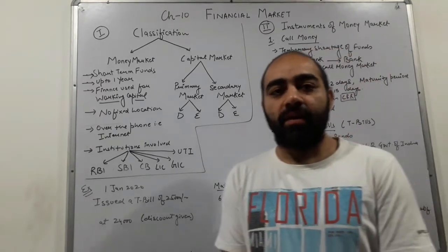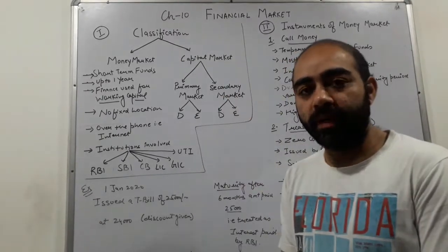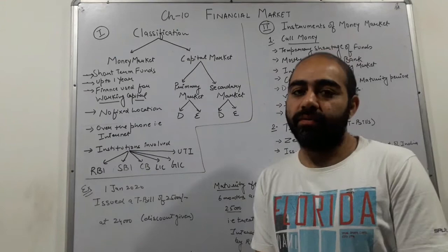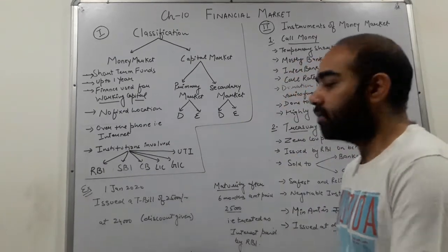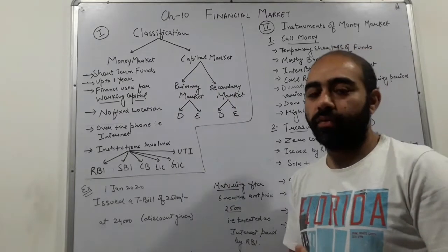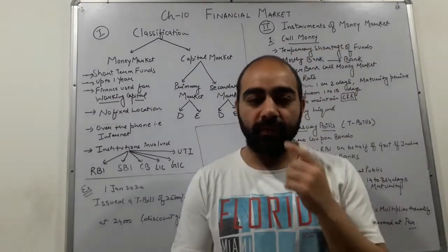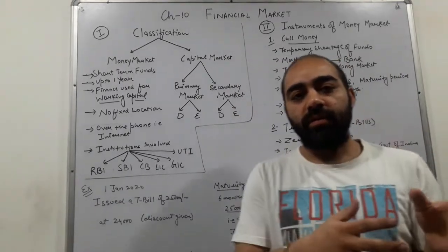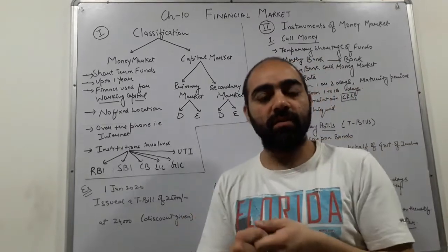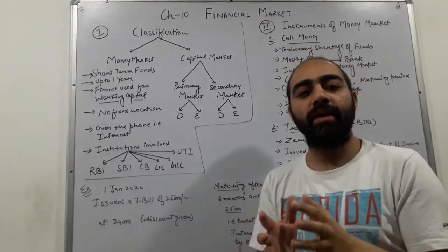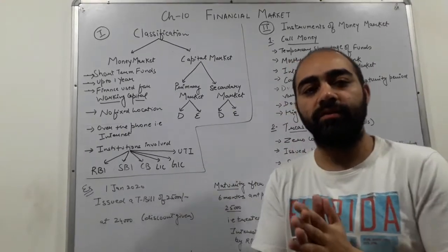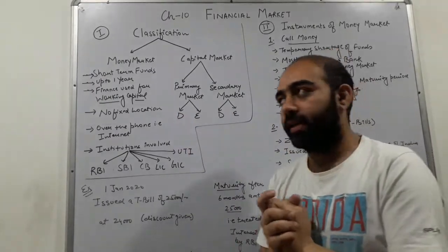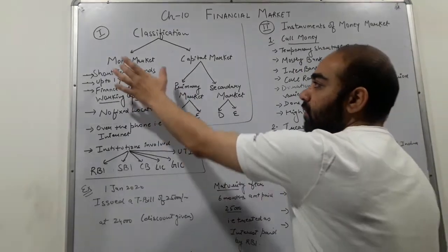Good morning everyone. This is my next lecture on Chapter 10: Financial Market. Today we will be discussing a brief overview of financial markets. We have the classification chart of financial market. As discussed in my previous video, financial market is where multiple people come to invest — savers and borrowers are linked to each other. Financial market is classified into two segments: first is money market, second is capital market.